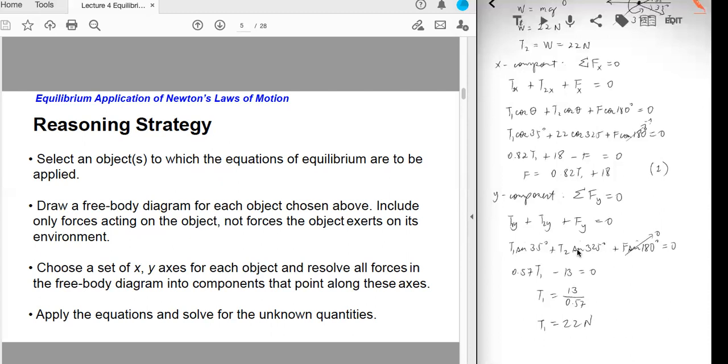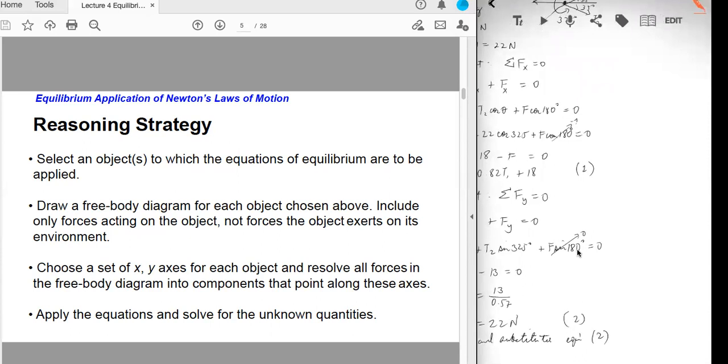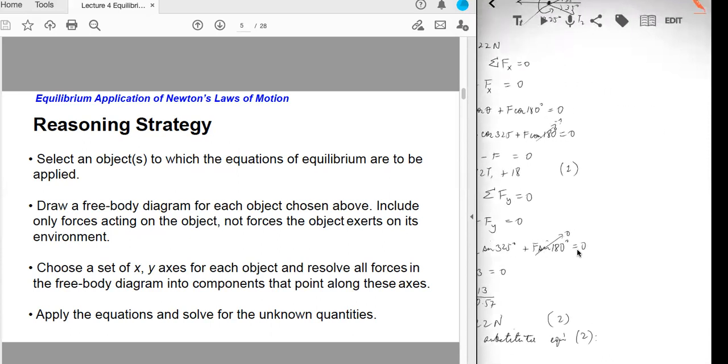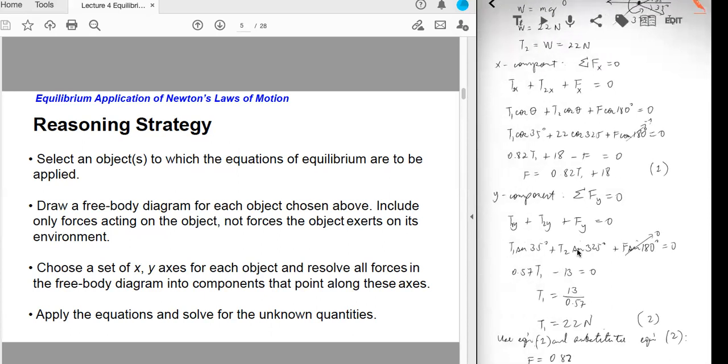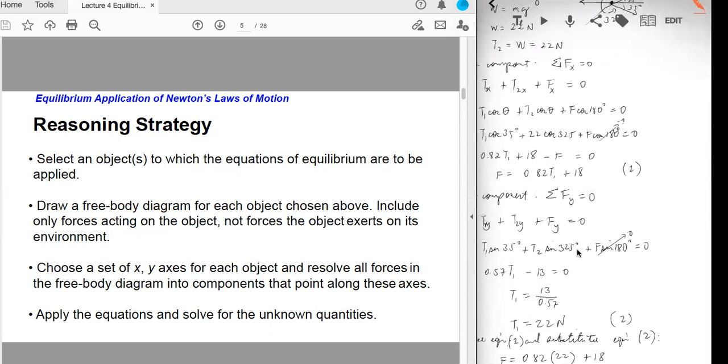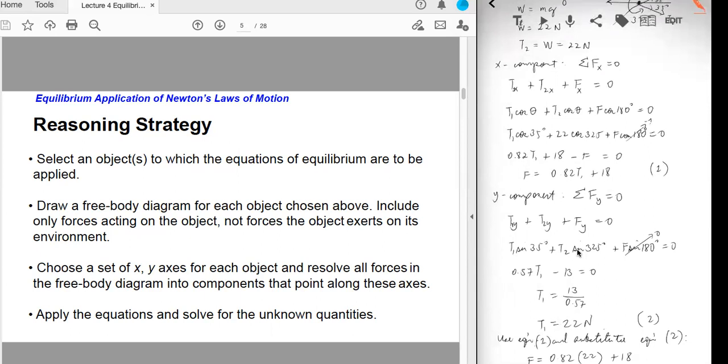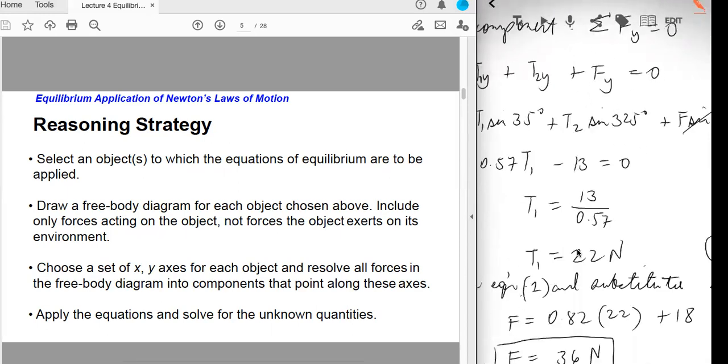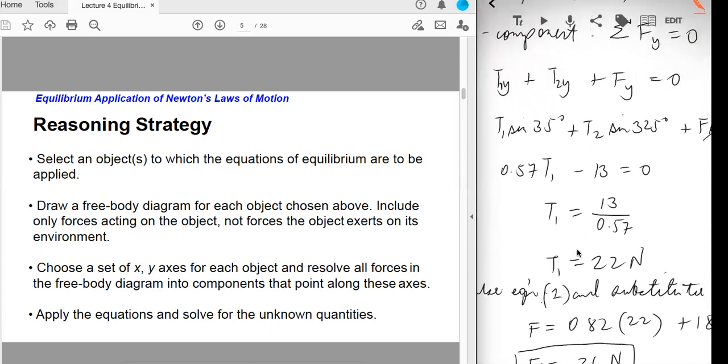But what is now F? So using equation number 1 and substitute equation number 2 in 1, we get an answer of F is equal to 0.82 times T1, which is 22 Newton, plus 18. Your answer should be about 36 Newton. So that's the final answer. If you have a question, please take note and then you can address it in our synchronous session.